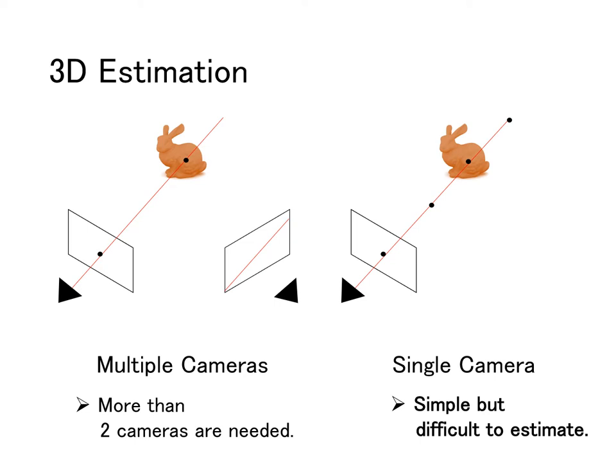3D estimation with images is often used in multiple cameras. In multiple cameras, 3D information is estimated by information from different viewpoints.